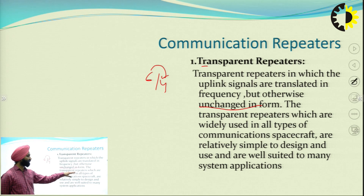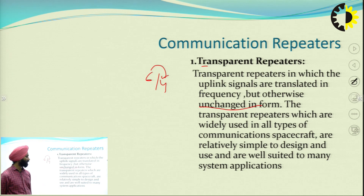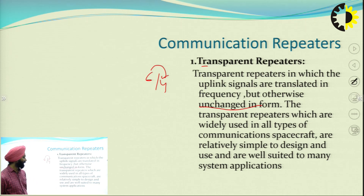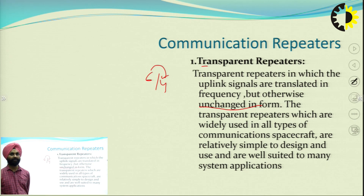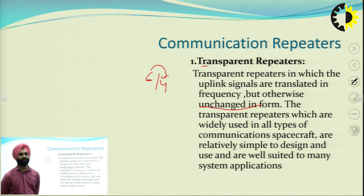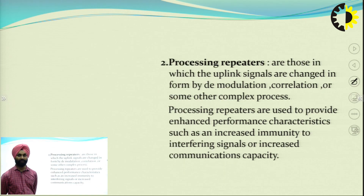The transparent repeater is widely used on all types of communication spacecraft because it is relatively simple to design and suited to many system applications. Since we do not want the satellite to be heavier, the transparent repeater is a lighter solution that simply performs signal frequency mixing and retransmission without further processing.